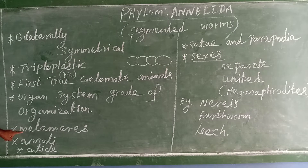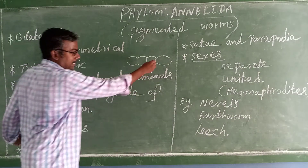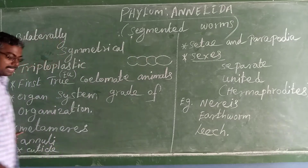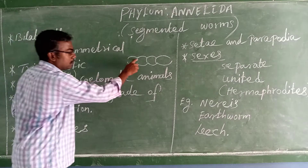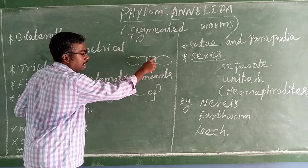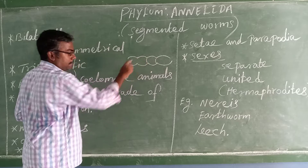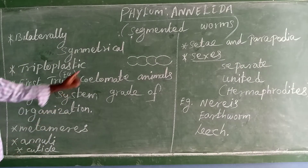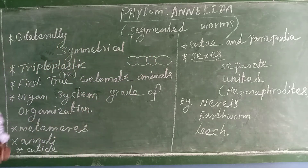There is metamerism — the body is divided into segments called metameres. There is one small ring-like structure called an annulus. The skin is covered by one layer called the cuticle.